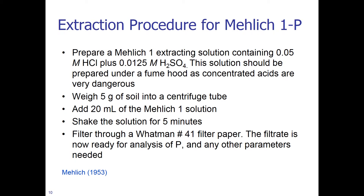For the Mehlich 1 extraction procedure: prepare a Mehlich 1 extracting solution containing 0.05 molar hydrochloric acid plus 0.0125 molar sulfuric acid. This solution should be prepared under a fume hood, as concentrated acids are very dangerous. Weigh 5 grams of soil into a centrifuge tube, add 20 ml of the Mehlich 1 solution, shake the solution for 5 minutes, and filter through a Whatman 41 filter paper. The filtrate is then ready for analysis of P and any other parameters needed.